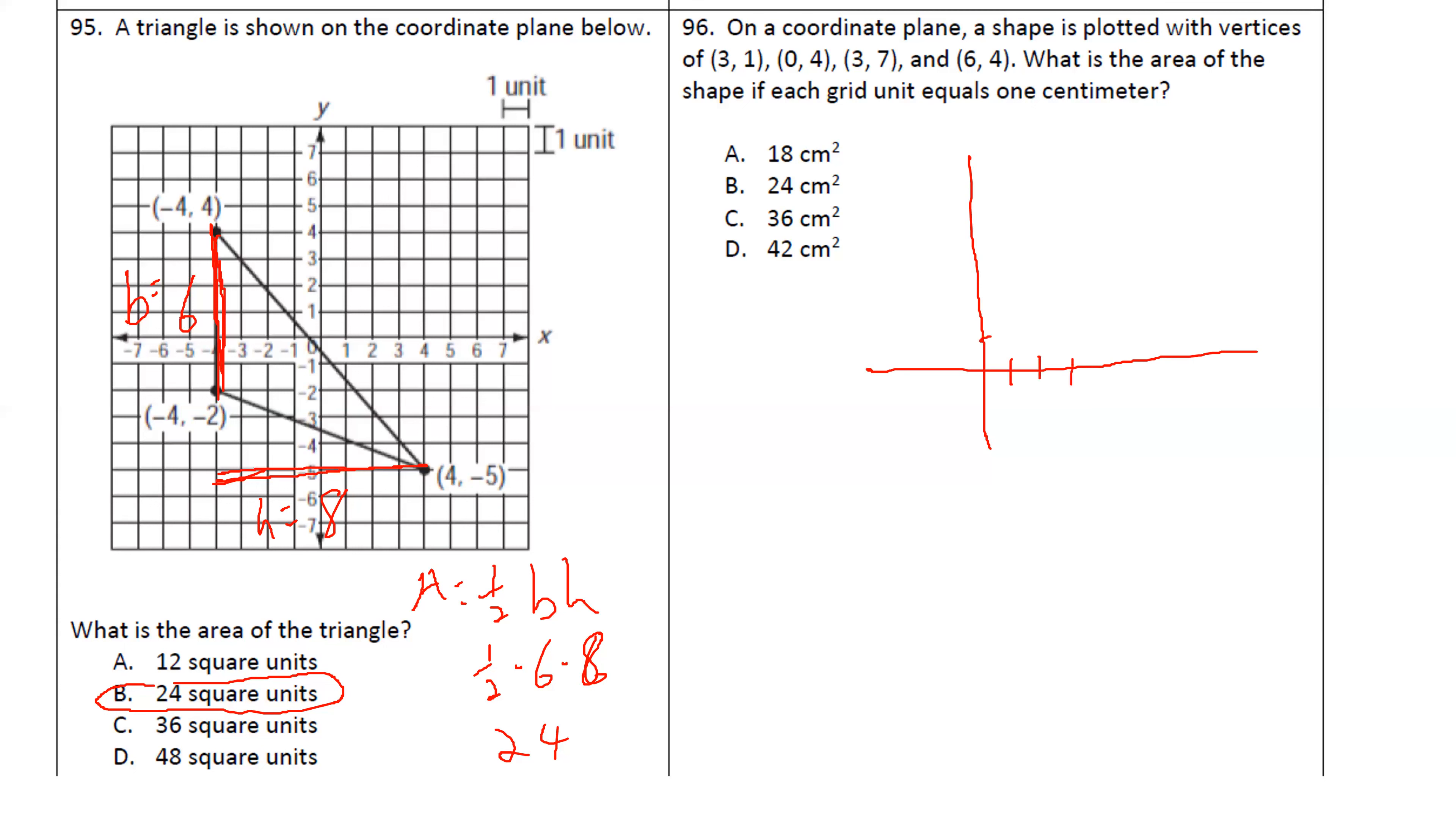So 3, 1, 1, 2, 3, 1. Then we have 0, 4, 1, 2, 3, 4. Then we have 3, 7. Then we have 6, 4.